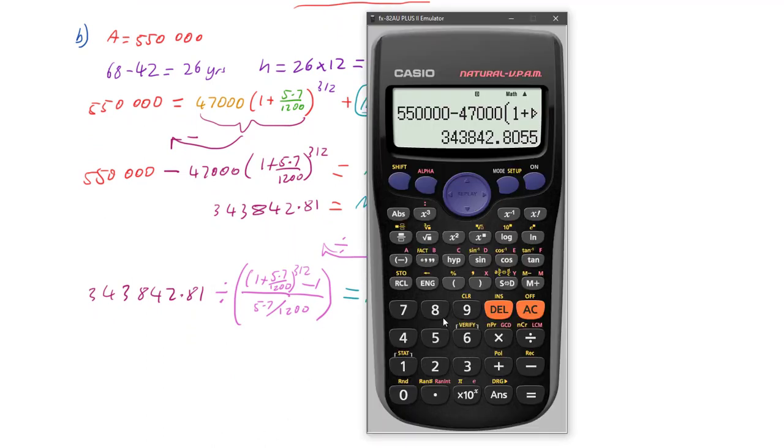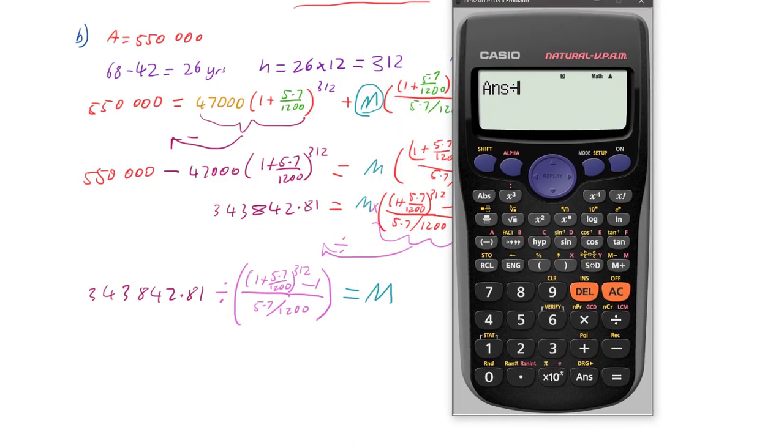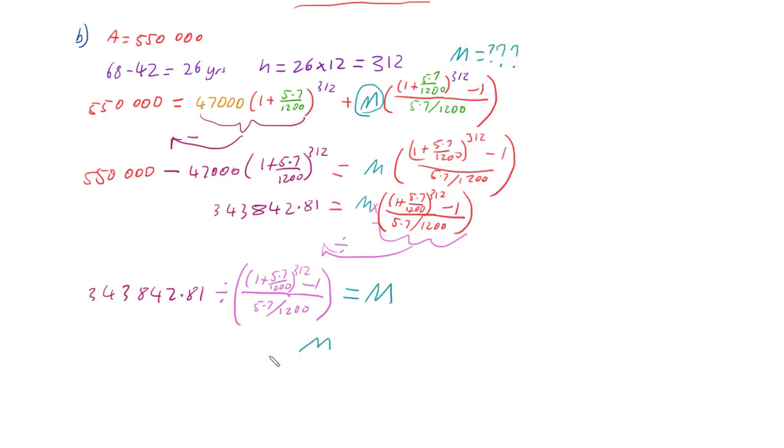So let's go and put that into a calculator. So we've already got the answer here, so I'm just going to hit divide, so we don't lose our answer and not have any rounding errors. And so we've got bracket, fraction, bracket, 1 plus 5.7 over 1200, to the power of 312 minus 1, over 5.7 over 1200. And close off our bracket, equals $482.81. So M is $482.81.